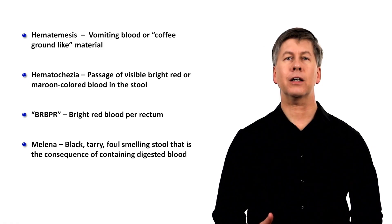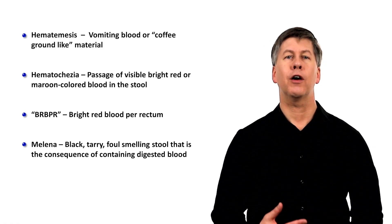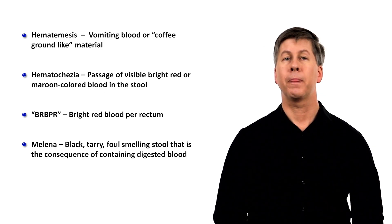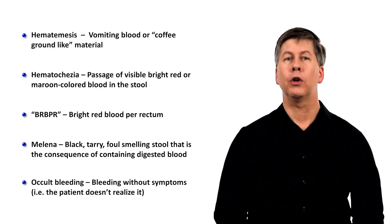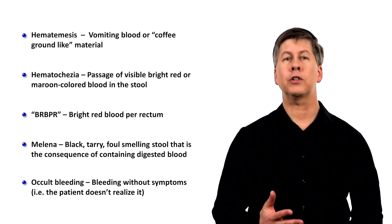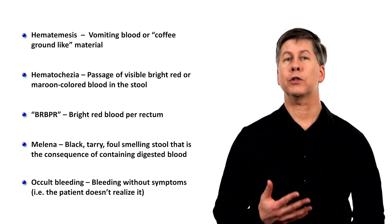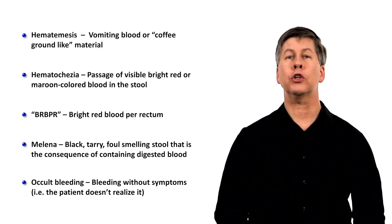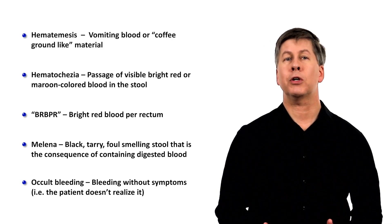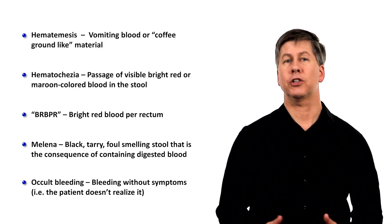Melena is black, tarry, foul-smelling stool that is the consequence of stool containing digestive blood. And last, the term occult bleeding refers to bleeding without the presence of symptoms — in other words, the blood loss is either so small or so gradual that the patient doesn't realize it because their stool hasn't visibly changed.